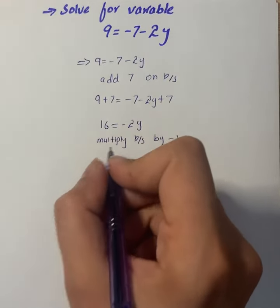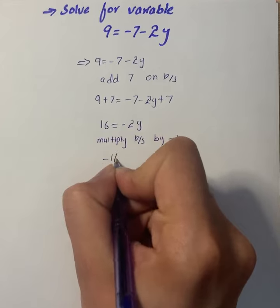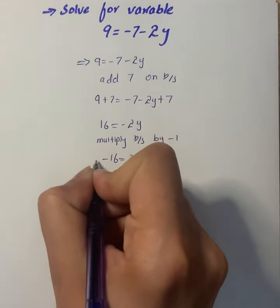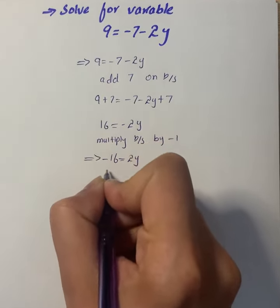Now we will multiply both sides by minus 1 to take out this negative sign, so we have minus 16 equals 2y.